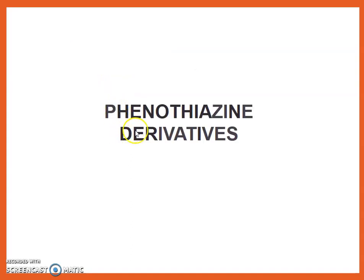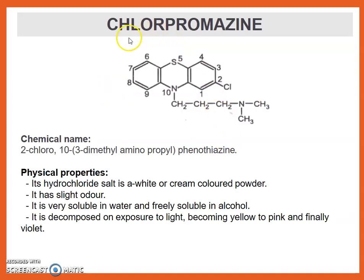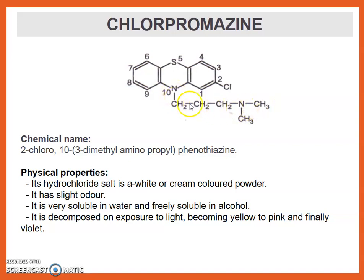Now we start with Phenothiazine derivatives. First drug: Chlorpromazine. This is the structure of Chlorpromazine, in which Phenothiazine is the parent compound. At the second position, a Chloro group is present, and at the 10 position, a 3-Dimethylaminopropyl group is present. Therefore, the chemical name is 2-Chloro-10-(3-Dimethylaminopropyl) phenothiazine.